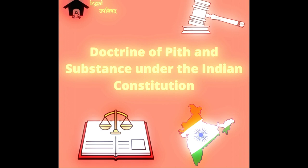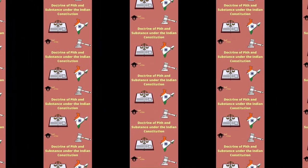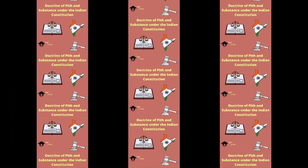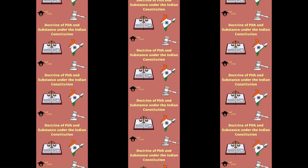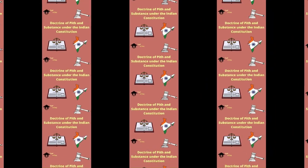In the doctrine of pith and substance, the word 'pith' means the essence of something, whereas the word 'substance' can be interpreted as the most important part of something. Collectively, we can state that the meaning of the doctrine of pith and substance is the true nature and substance, or true nature and character.